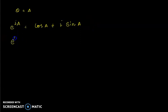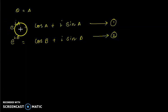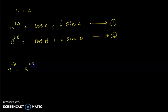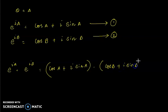Similarly, e^(ib) = cos b + i sin b. Now I am going to multiply these two expressions. On the left-hand side, e^(ia) × e^(ib) = e^(i(a+b)), using the exponent addition rule.